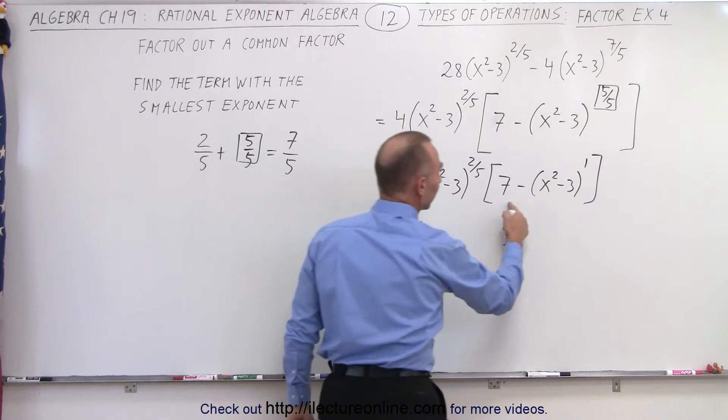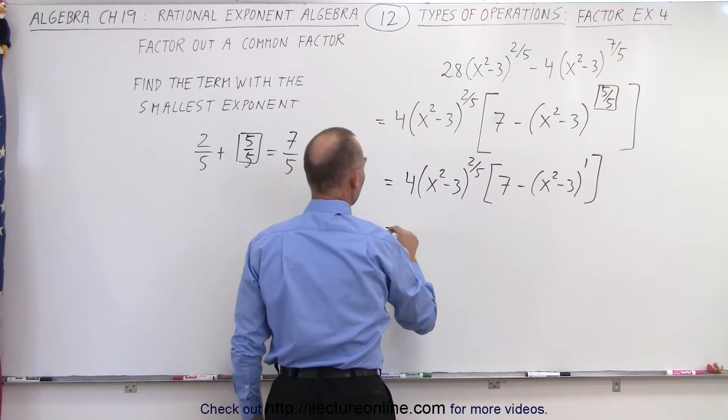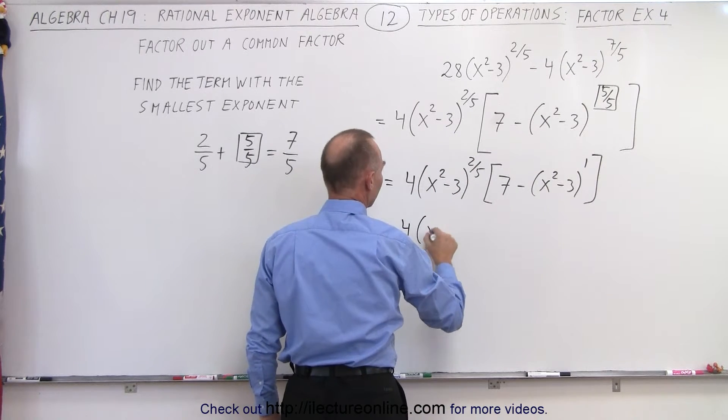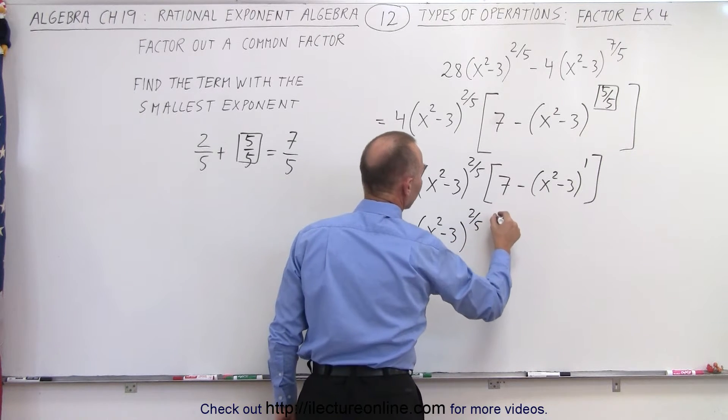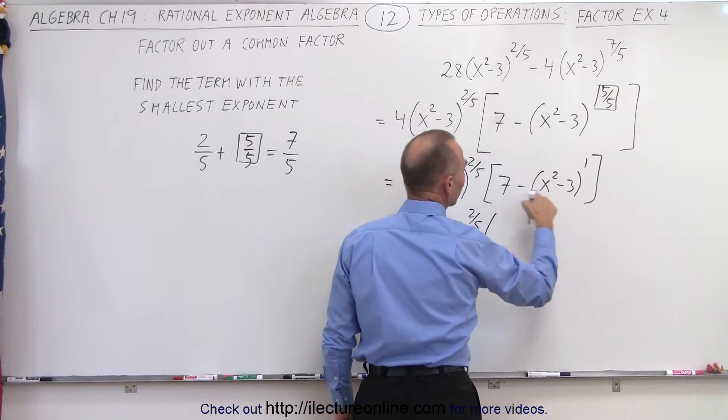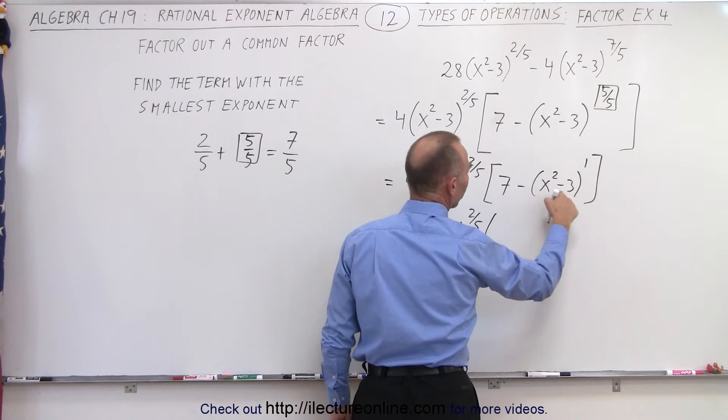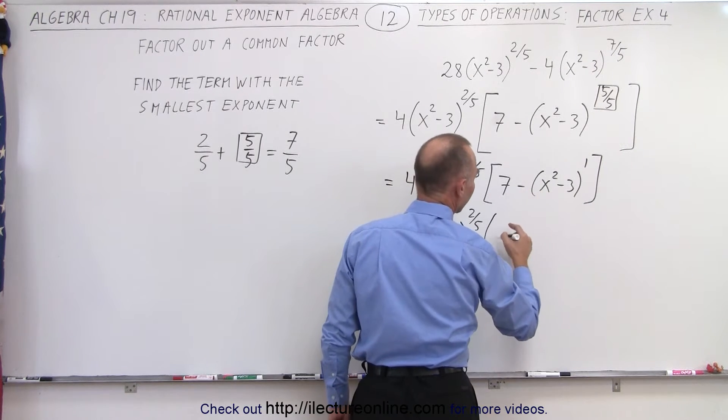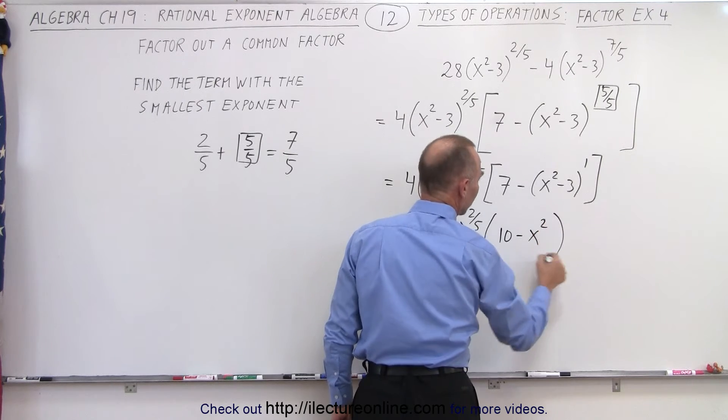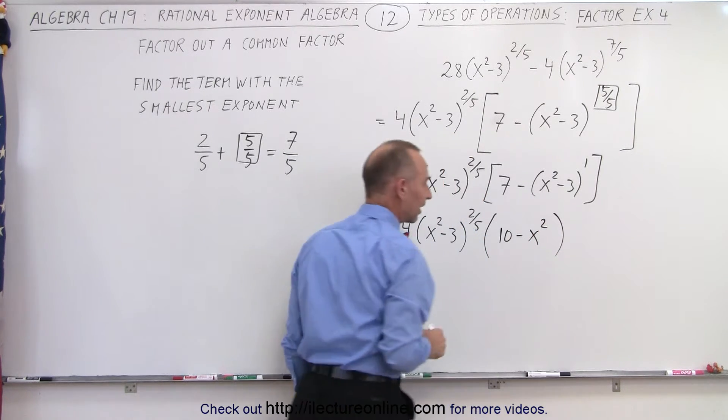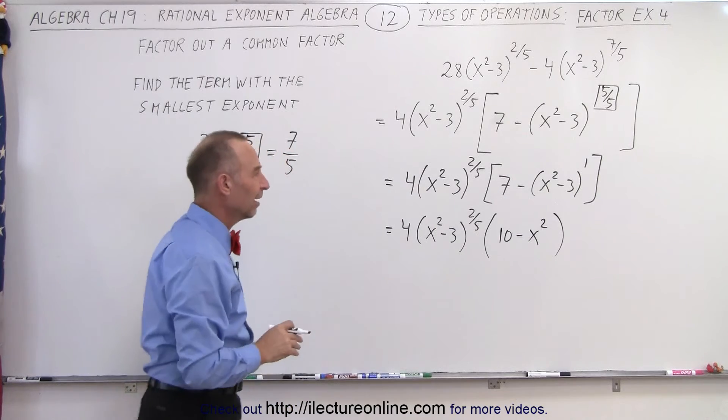We can simply remove that and collect common terms. So this can be written as 4 times x squared minus 3 to the 2 fifths power times 7 minus times a minus becomes a plus 3. That would be 10 minus x squared. I'll write it in this order because that way the negative becomes second. You don't have to put negative in front there.